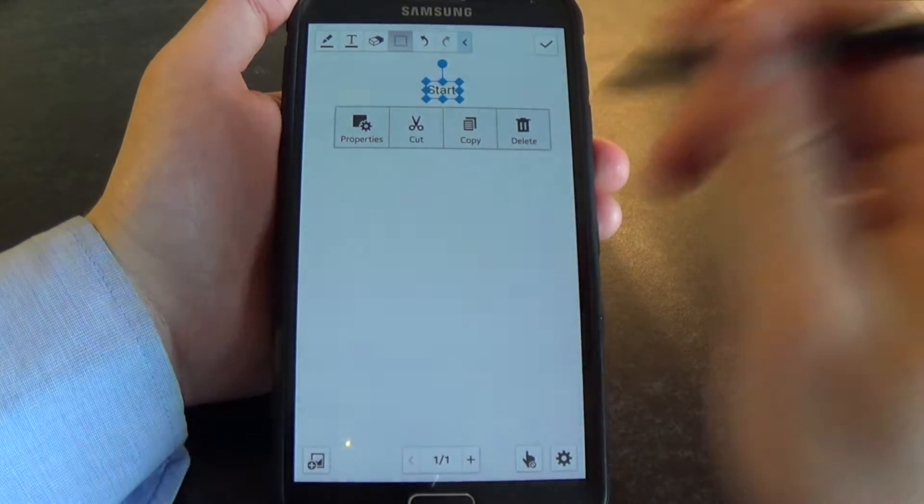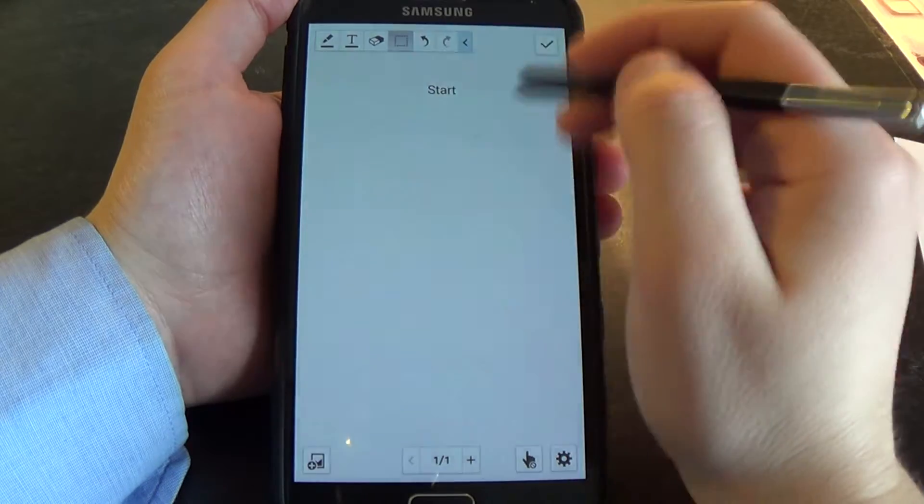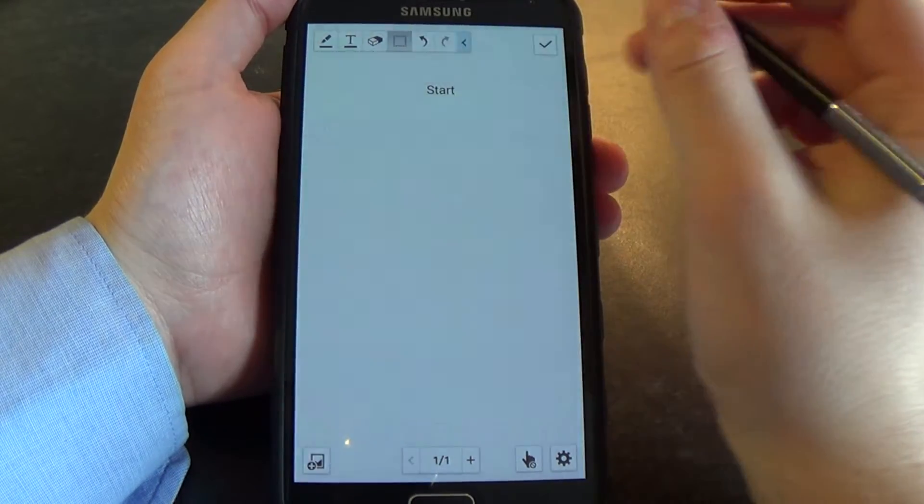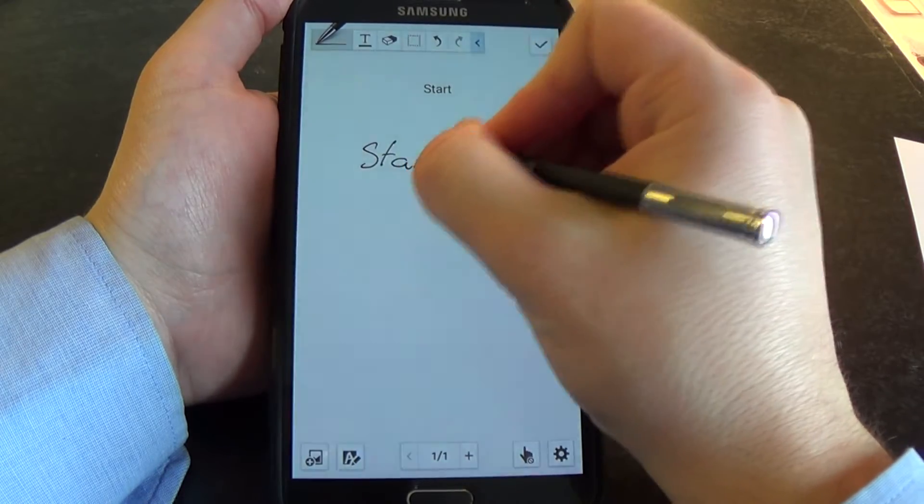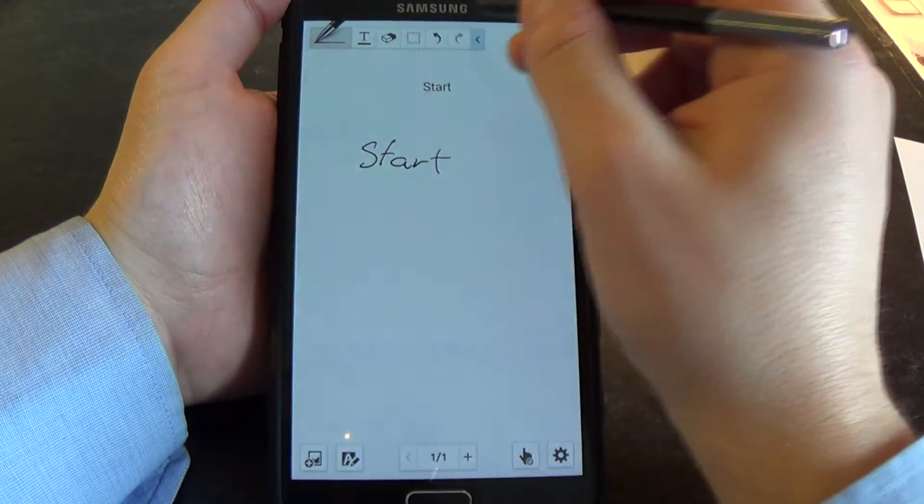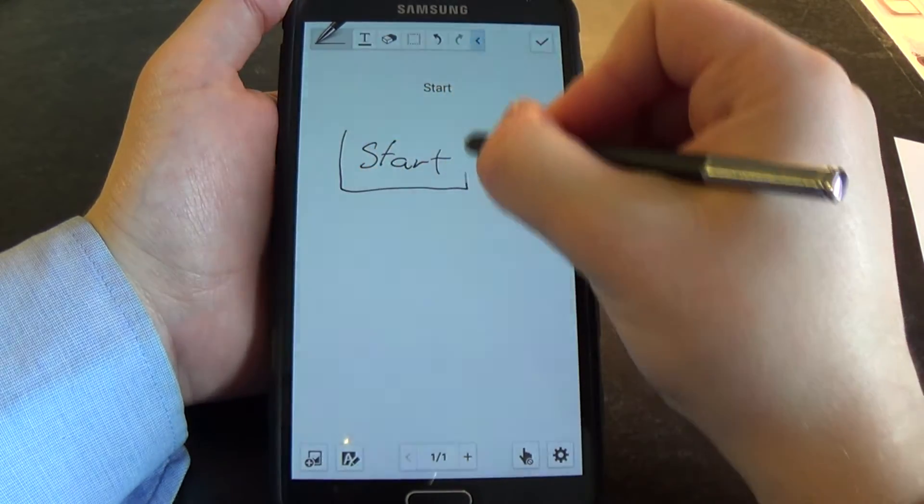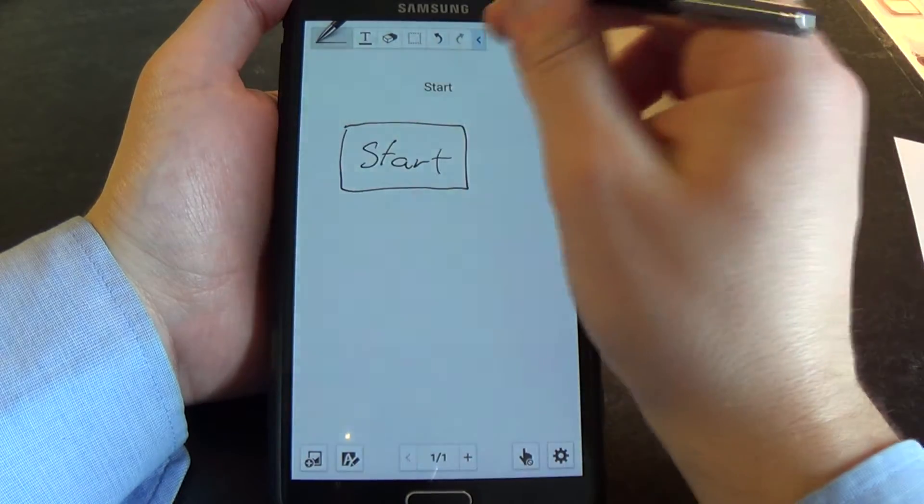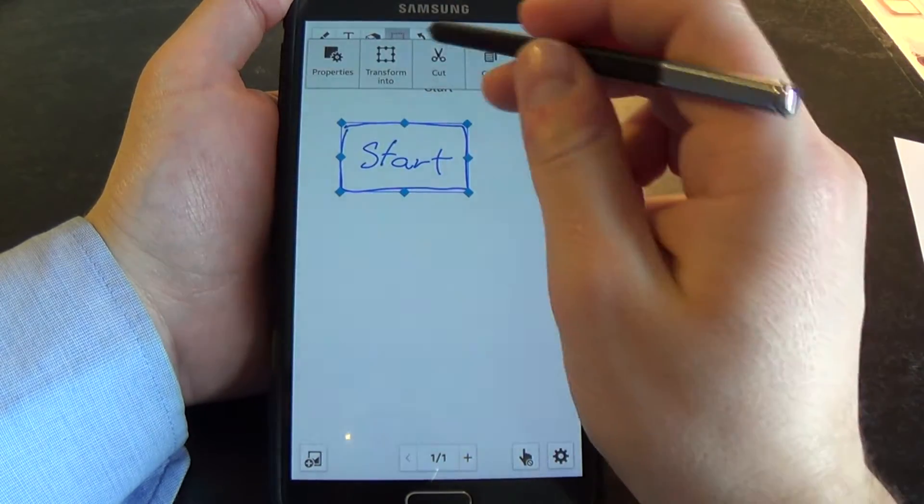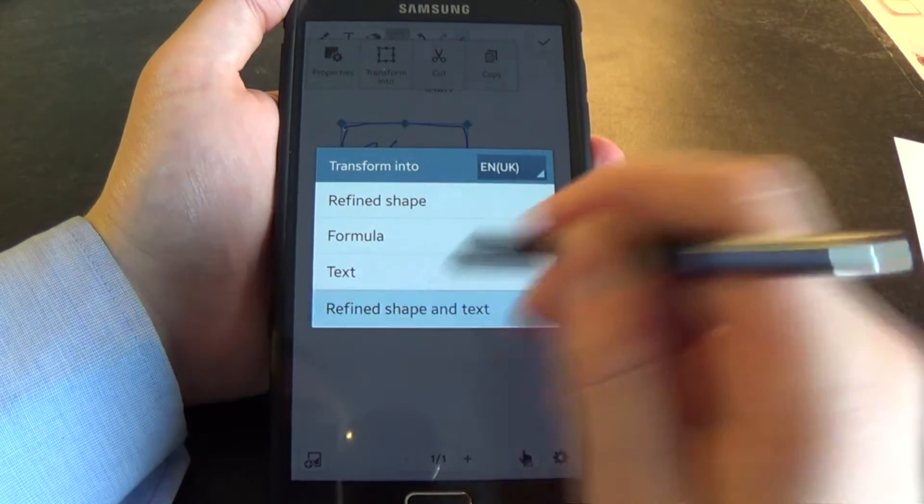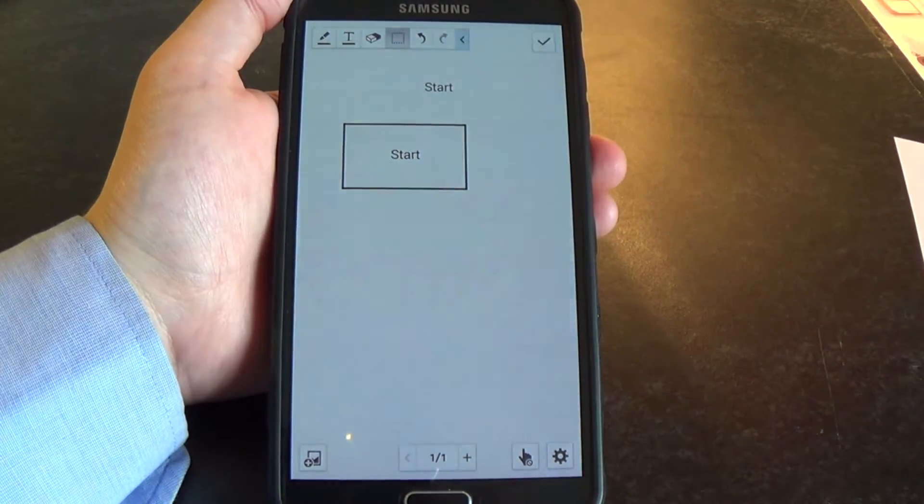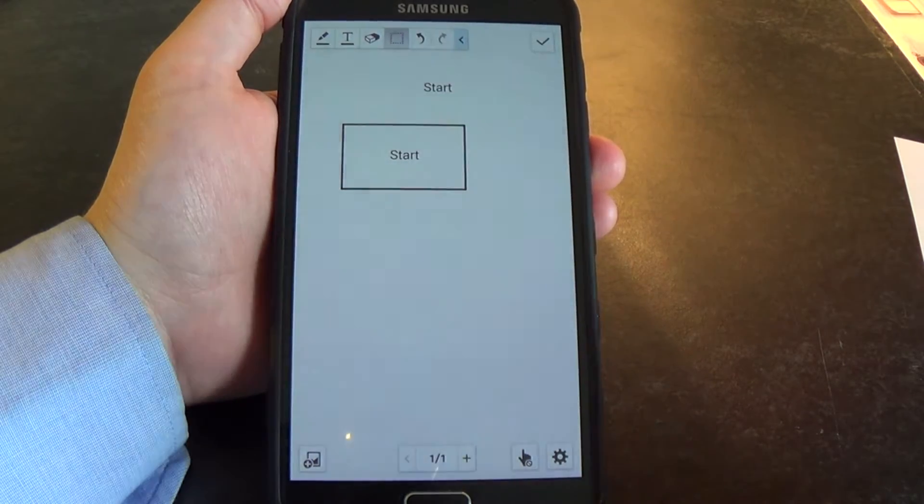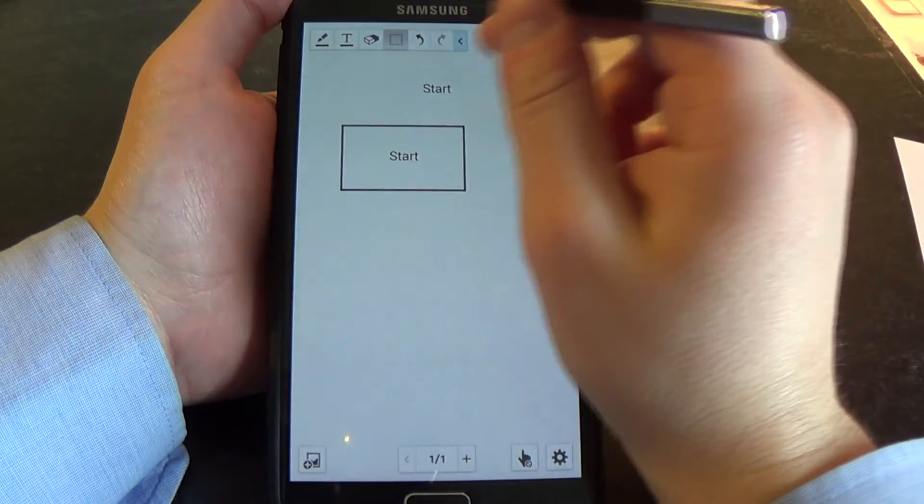If I do something else, if I do Start and I draw that around it, and if I select it all again, Transform into Redefine Shape and Text. See, it's got me a box with Start in the middle of it, which is really handy for doing little flowcharts and stuff.